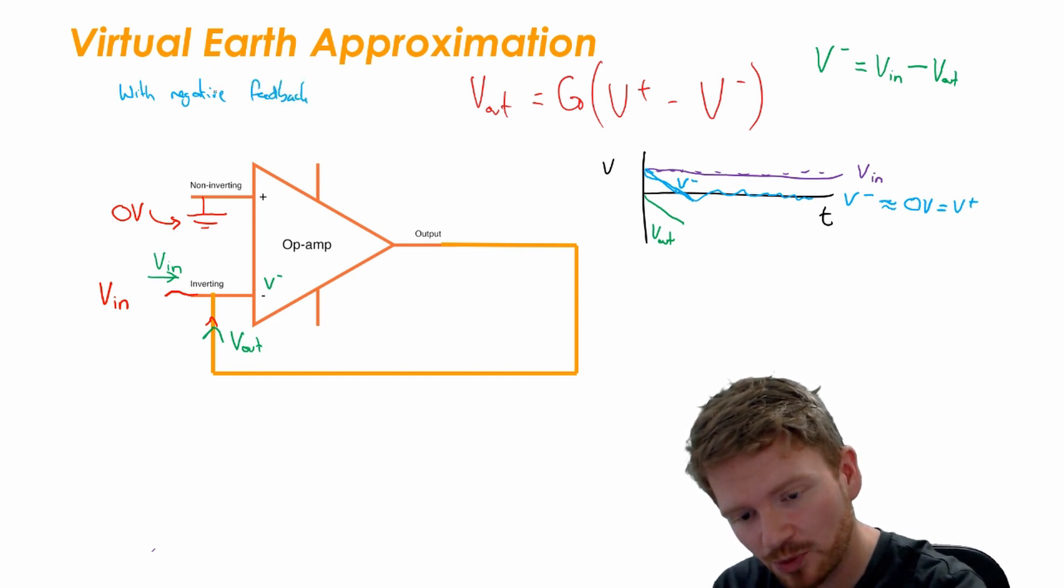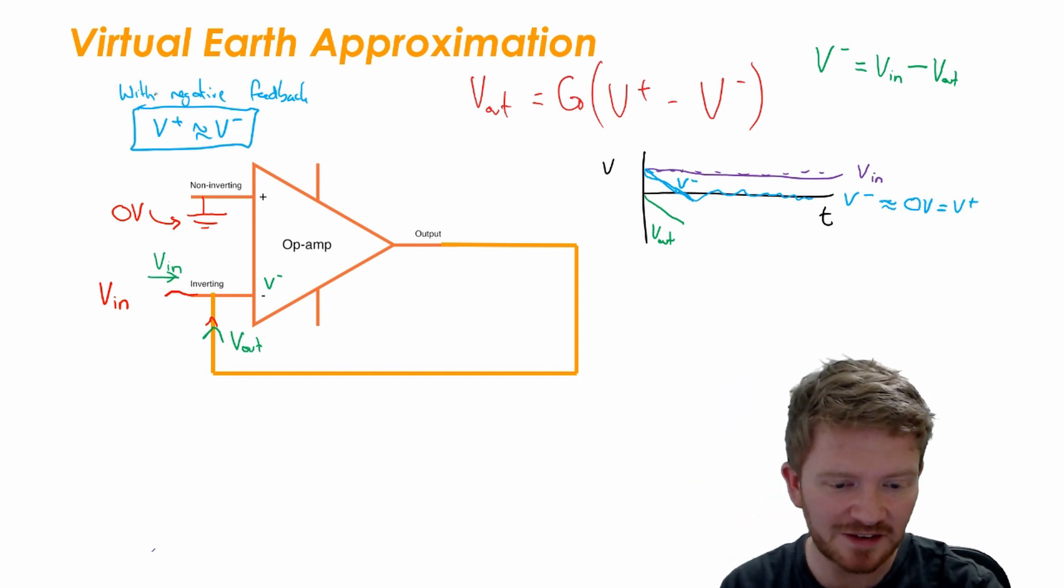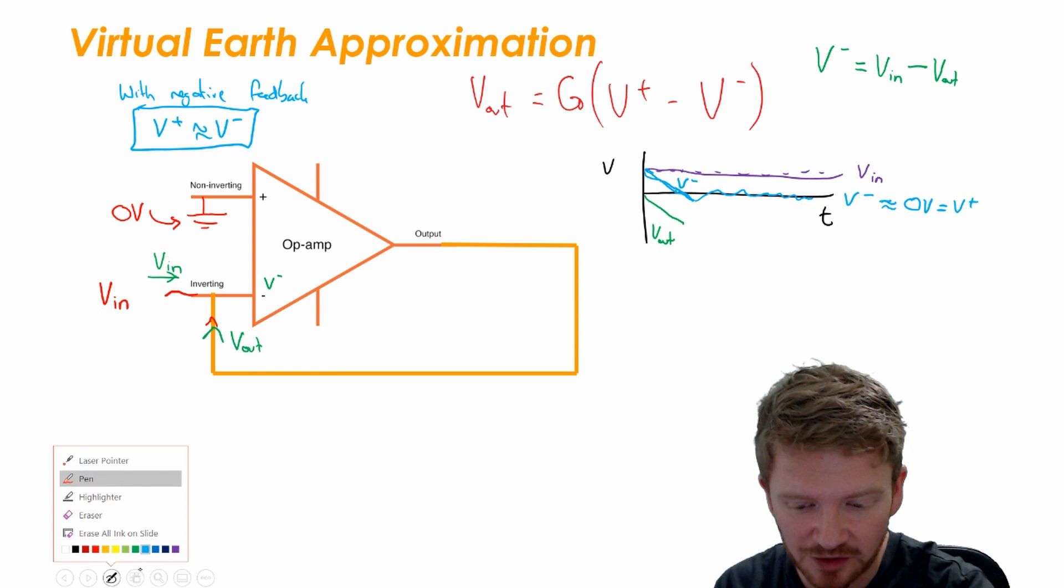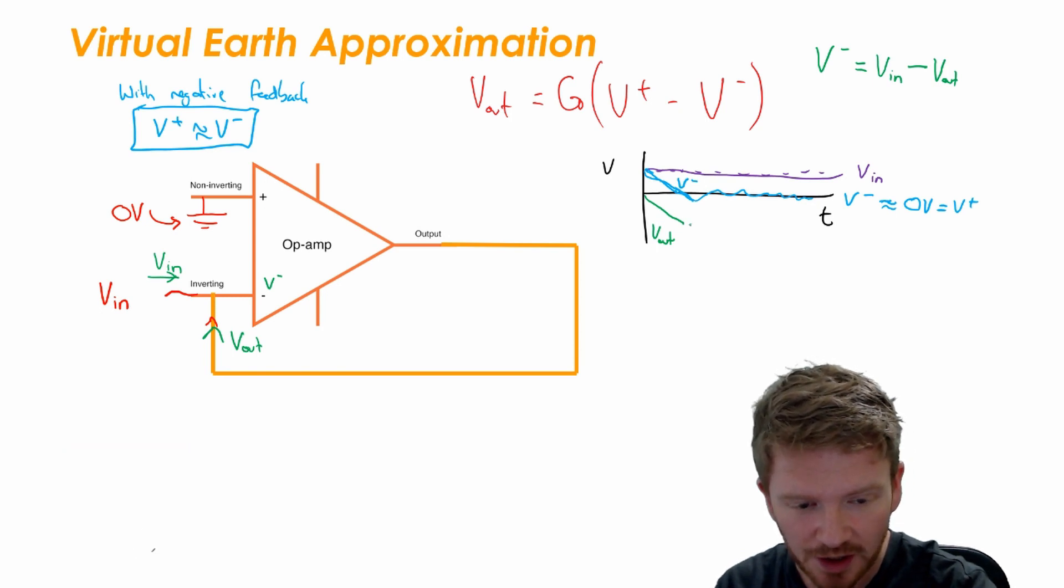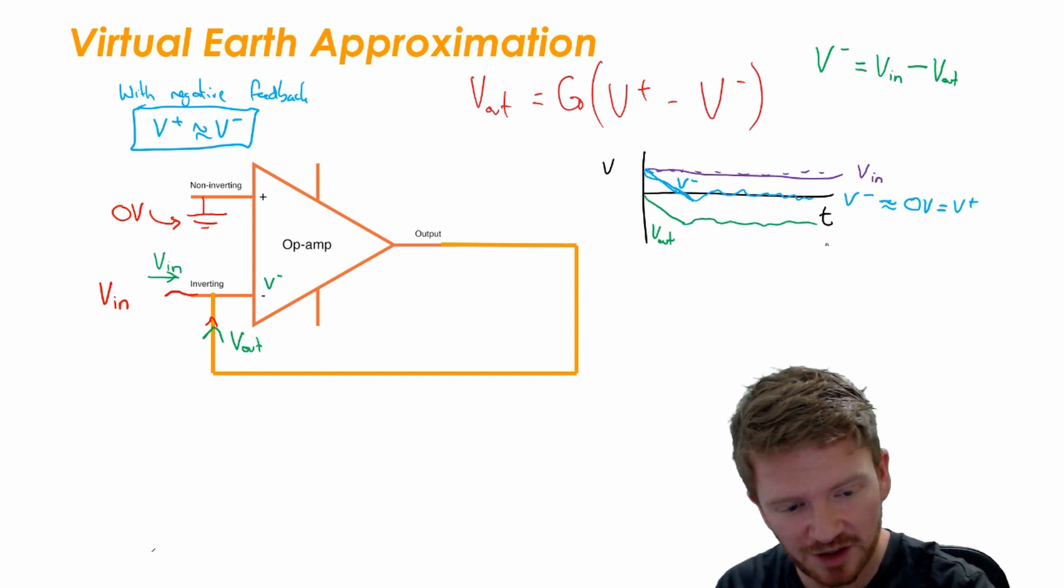The op-amp will do whatever is necessary to make the inverting input about the same as the non-inverting input. And in this case that means that V_out is going to oscillate around with V_inverting to the negative of V_in.